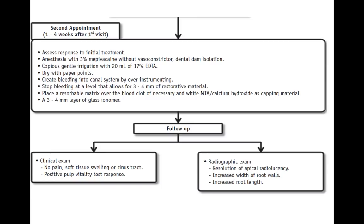The second appointment is done one to four weeks after the first visit to assess the initial treatment response. At this visit, use 3% mepivacaine without a vasoconstrictor. The reason: vasoconstrictors prevent systemic toxicity and decrease blood flow. Since we are planning to induce bleeding to fill the canal, we do not want any vasoconstrictor to stop the blood supply. That is why 3% mepivacaine without vasoconstrictor is used in regenerative procedures.